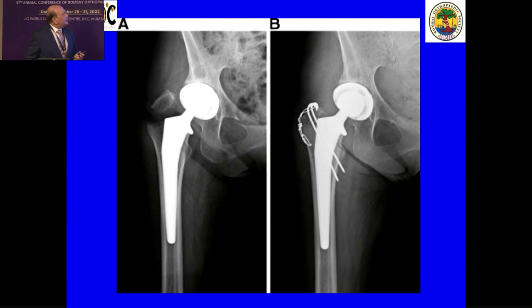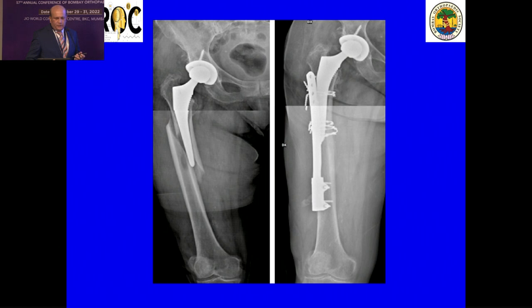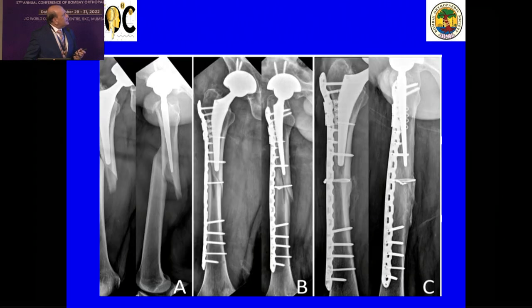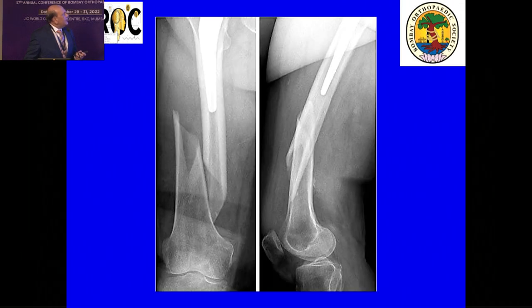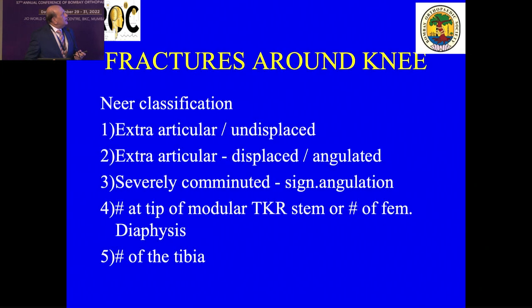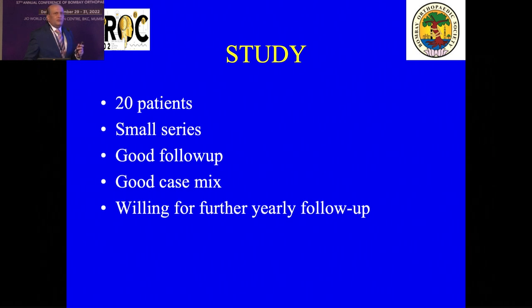The Vancouver classification: proximal fractures of the greater or lesser trochanter are type AG. Type B is around the stem. B1 is around a solidly fixed stem, B2 is below the tip, and B3 is comminuted with osteoporosis and multiple fractured fragments. Well below the tip is type C, between the hip and knee prostheses. The more important thing to realise is whether we need to look for a solidly fixed femoral stem versus a loose stem, and we need to look for loss of bone — solid or otherwise.